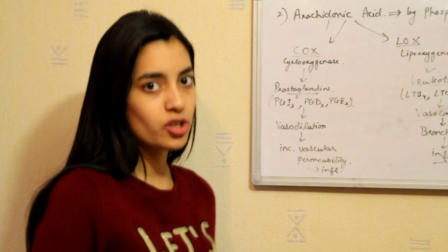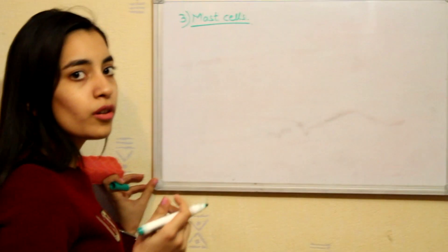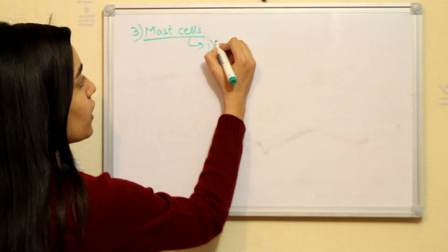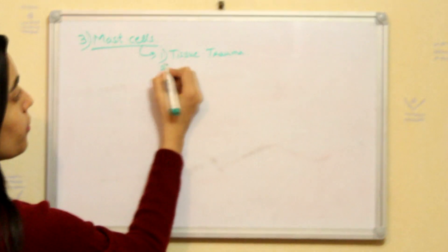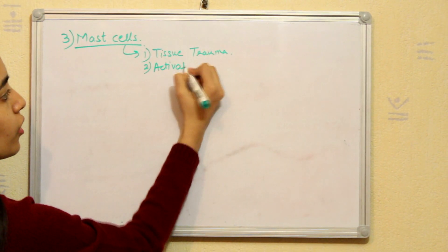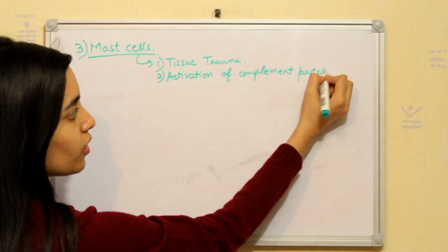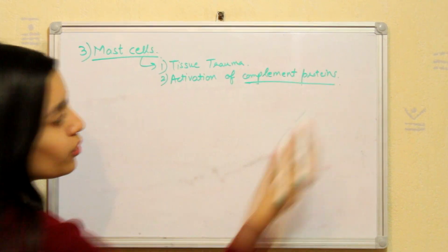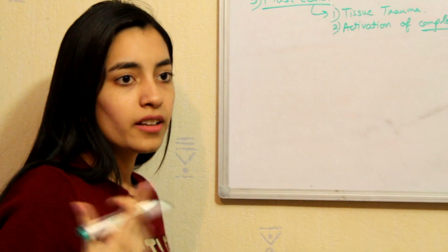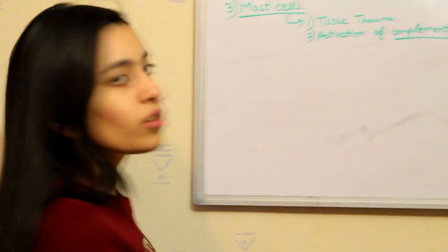So the next factor that mediates acute inflammation is mast cells. So mast cells, first of all we will see how the mast cells are activated. Mast cells are activated by the tissue trauma or by the activation of complement proteins. We will study about complement proteins in the next videos. So you just need to remember some facts that I will give about complement proteins right now. But later in another video, we will discuss about complement proteins.